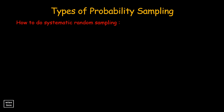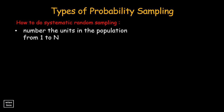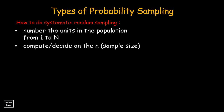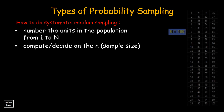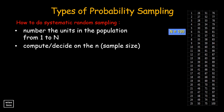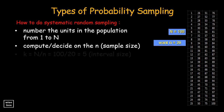Here's how to do systematic sampling. First, the population must be listed in a random order. Then number the units in the population from 1 to N. Next, compute or decide on n, the sample size. Let's assume that we have a population that only has N equals 100 people in it, and that you want to take a sample size of n equals 20. Then compute for the interval size, done by dividing the total number of population by the sample size.